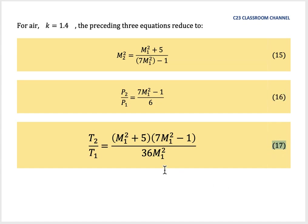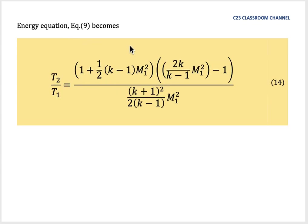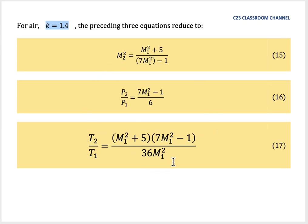Please bear in mind that these equations are only for air, which has K = 1.4. If you are dealing with another gas — for example, hydrogen, helium, and so on — you need to use the previous general equations, because you must substitute the correct value of K for that gas. These simplified equations are only valid for air with K = 1.4.